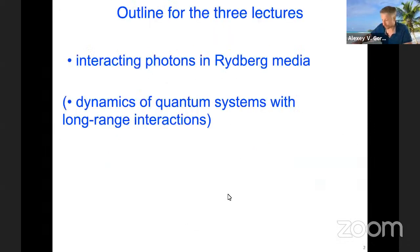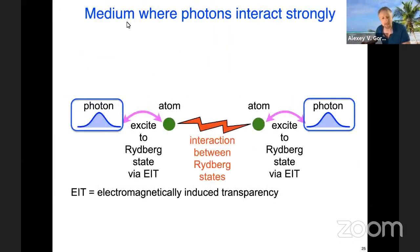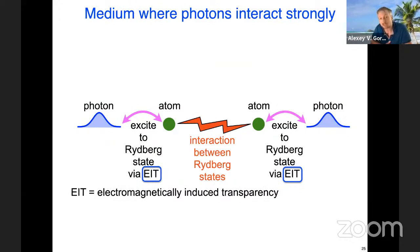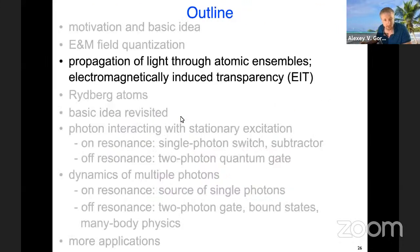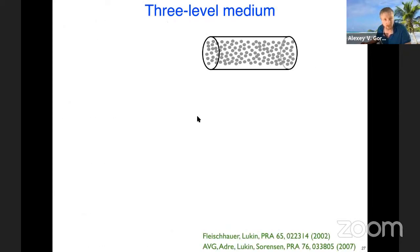What we're interested in is studying the interactions between photons mediated by Rydberg atoms. Last time we quantized the electromagnetic field, or rather reviewed the quantization, and then we started discussing electromagnetically induced transparency. Let me just quickly click through those slides we looked at last time to jog your memory on EIT, and then I'll arrive at the slide where we stopped and pause for questions.